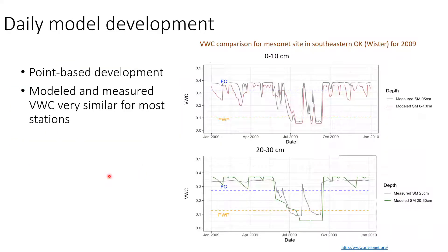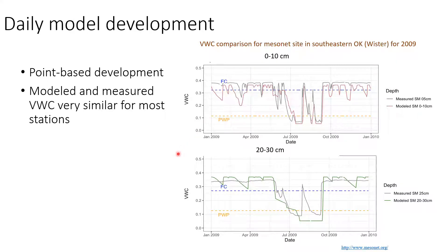In order to use this model for daily predictions, we first tested it on Mesonet station data where we have measured soil moisture. These point-based estimates were used to determine initial conditions and how to modify our Newhall to make it a daily model. Here you can see data from one of these Oklahoma Mesonet stations, the 0 to 10 centimeter increment and the 20 to 30 centimeter depth. The black line shows measured soil moisture from the Mesonet station, and the colored line in both cases is our model values from our Newhall. You can see the modeled and measured values track pretty nicely, so that gave us some confidence to apply this model spatially.